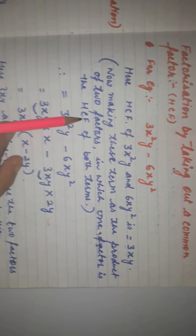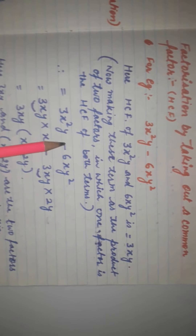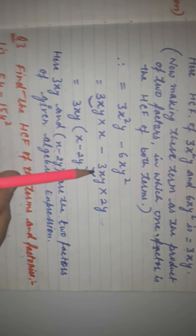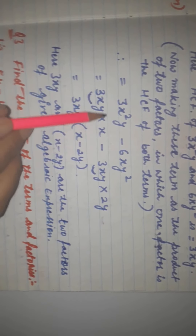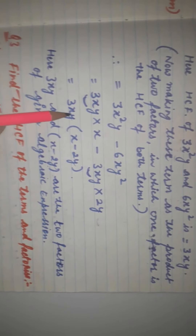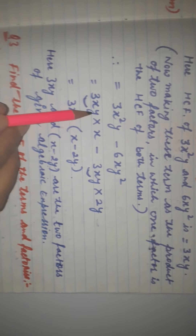The next step is making each term as a product of factors in which one factor is the HCF, that is 3xy. So 3x²y minus 6xy² can be written as 3xy into x, minus 3xy into 2y. When we take 3xy common, we get 3xy(x minus 2y). Therefore, 3xy and (x minus 2y) are the two factors of the given algebraic expression.